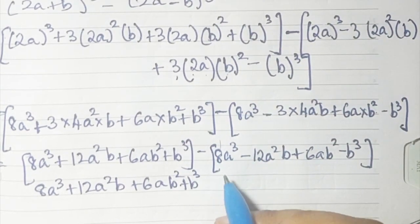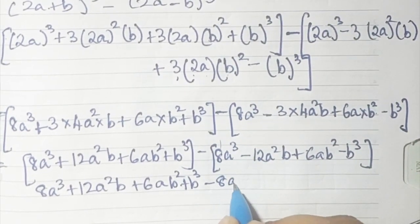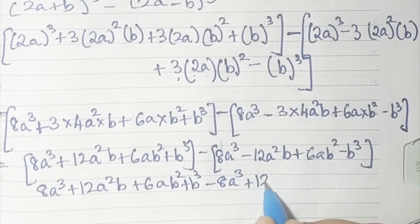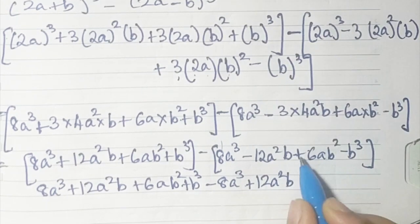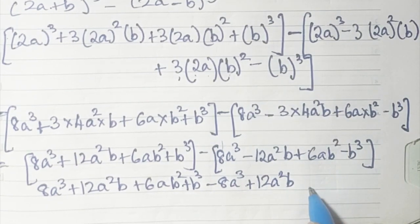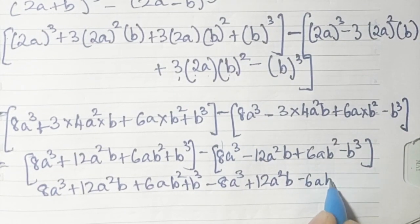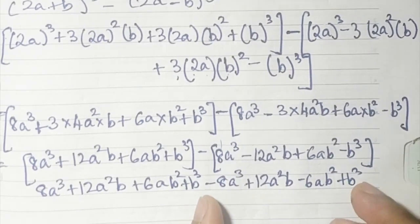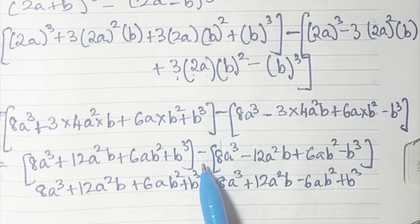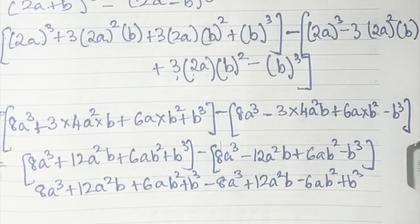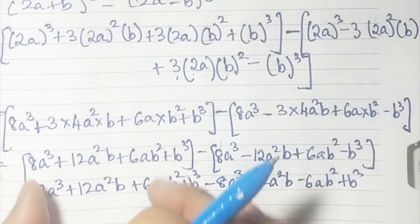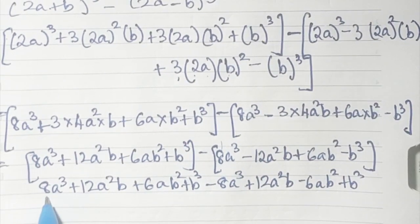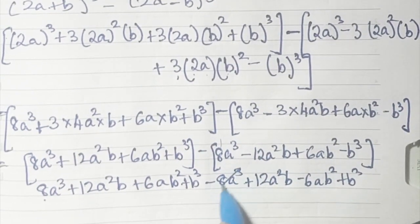For example, +8a³ will become -8a³; -12a²b will become +12a²b; +6ab² will become -6ab²; and -b³ will become +b³. Since the first bracket has a positive sign, it comes down as it is. So +8a³ and -8a³ cancel each other.